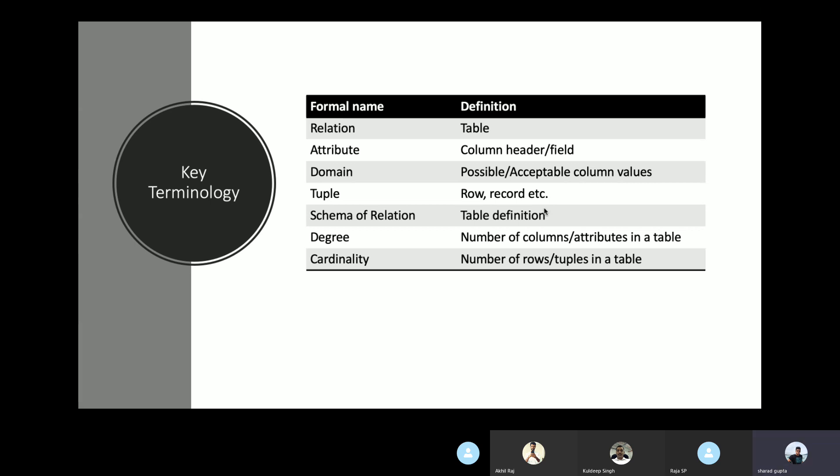The schema of a relation is the table definition — the combination of the name of the relation and the set of attributes it contains. The number of attributes a schema contains becomes the degree of that relation. The number of rows present in a table becomes the cardinality of the table.